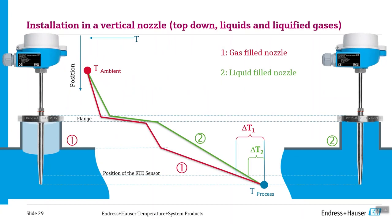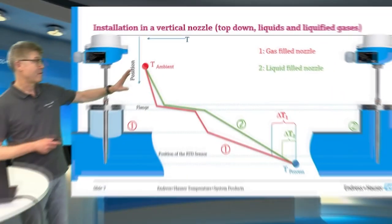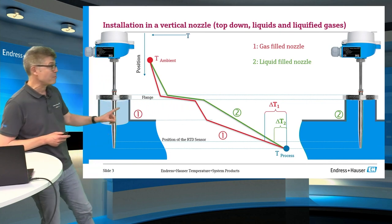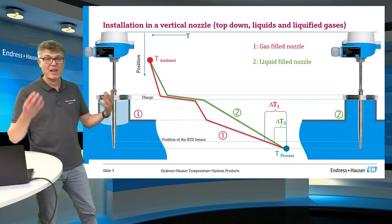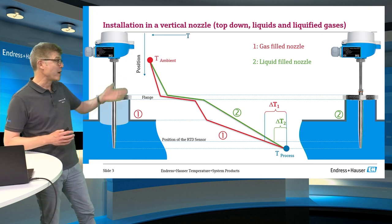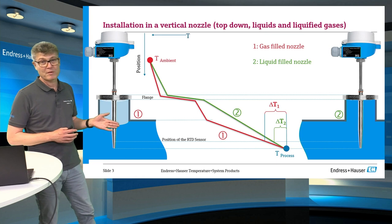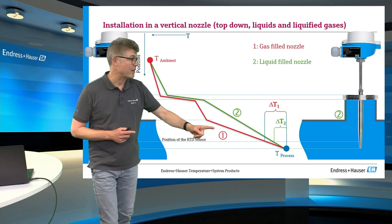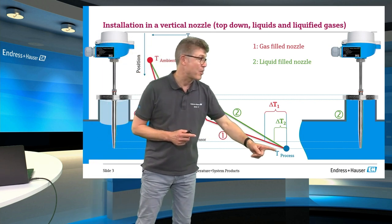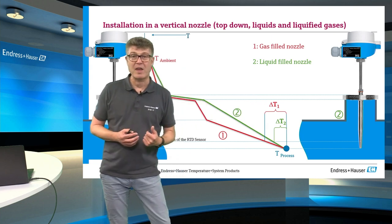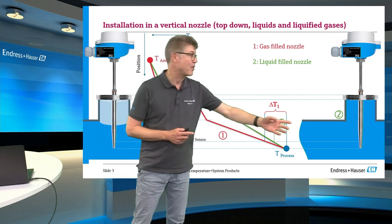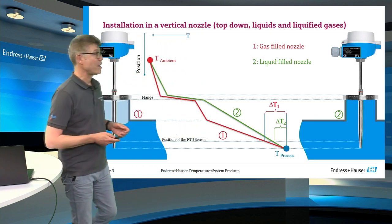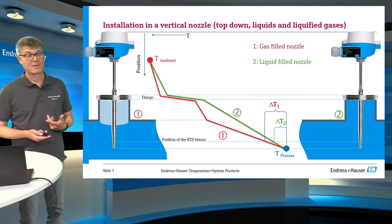In the trapped gas case, we have an additional step. Because this part of the thermal well is cut off from the energy and from the flow, it will be more influenced by the ambient conditions. So the gradient will be different, and at the end we will have a gradient which is going like this. You can see the resulting mistake will be higher than in the case when the total thermal well is surrounded by the flow. The measurement error is bigger because of this installation.